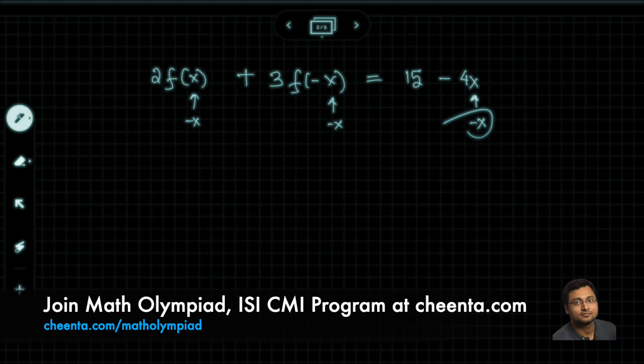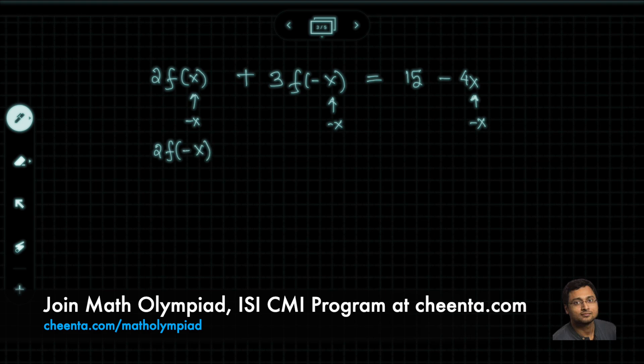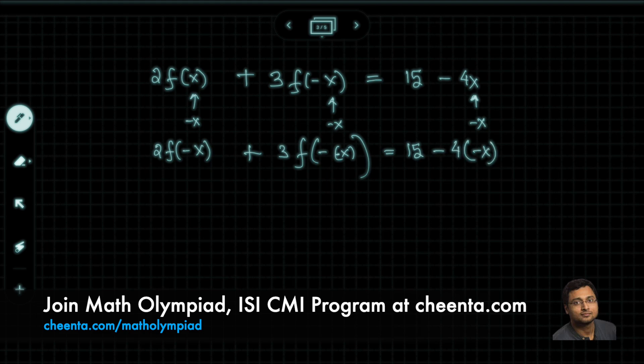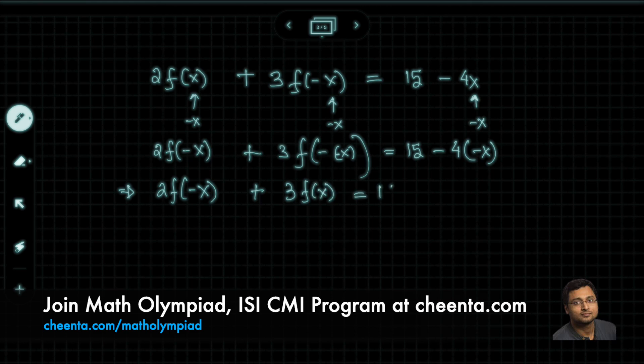Let's see what we get. We get 2 times f(-x) plus 3 times f(-(-x)) equals to 15 minus 4 times negative x. Now if we cancel off the signs, we get 2 times f(-x), 3 times f(x) equals to 15 plus 4x.